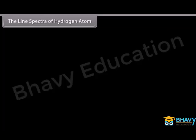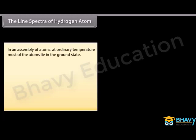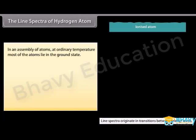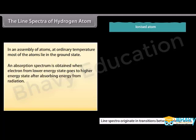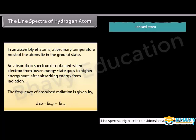Line spectra of hydrogen atom: In an assembly of atoms at ordinary temperature, most atoms lie in the ground state. If white light is passed through such an assembly of hydrogen atoms, the transmitted light will not have radiations of various wavelengths corresponding to the Lyman series — this is the absorption spectrum. An absorption spectrum is obtained when an electron from a lower energy state goes to a higher energy state after absorbing energy from radiation. The frequency of absorbed radiation is given by hν = E_high − E_low.